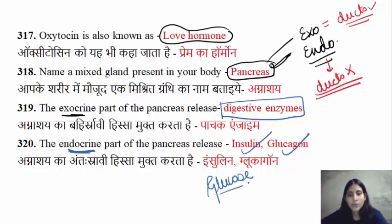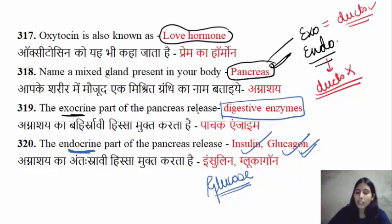The two hormones from the endocrine part of the pancreas are insulin, which we all know, and glucagon. These are involved in the endocrine function.